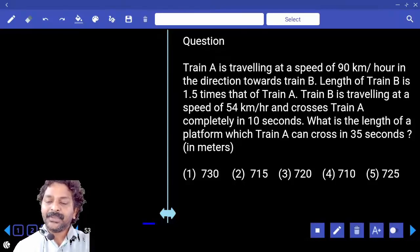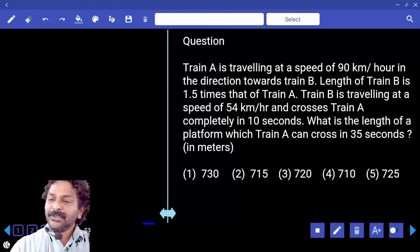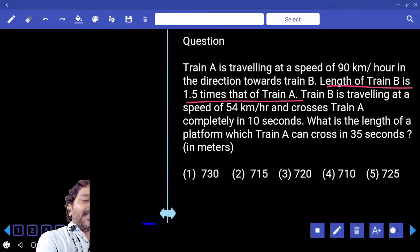What is the length of the platform which train A can cross in 35 seconds? First of all, length of train B is one and a half times of train A. If train A length is 2x, train B length becomes 3x.